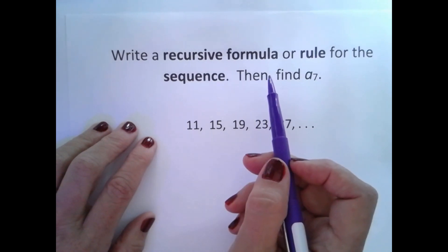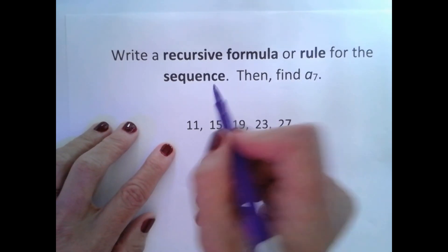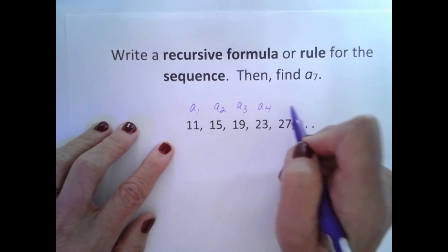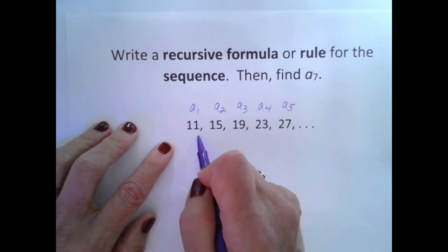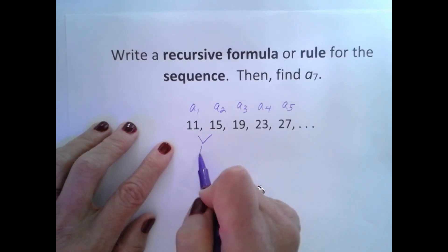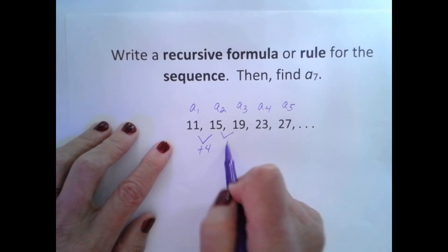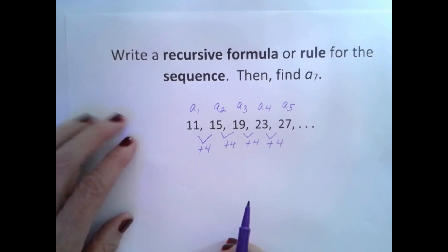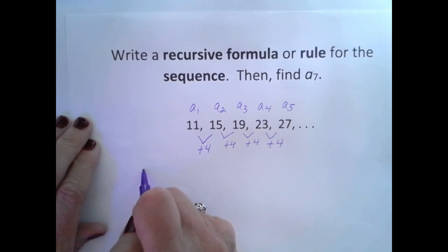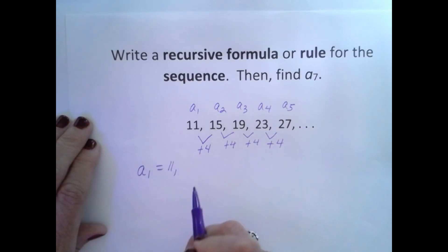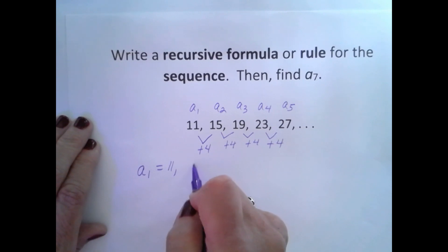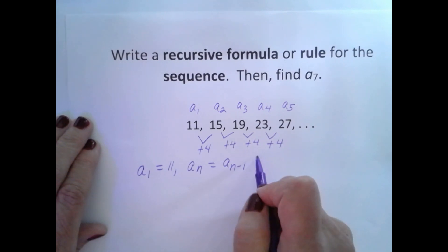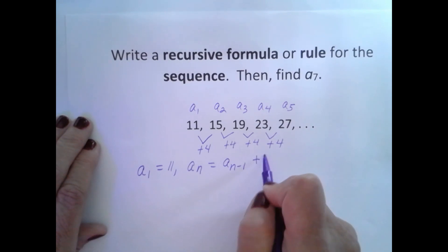Write a recursive formula or rule for the sequence, then find a sub 7. I'm going to list my terms: a sub 1, a sub 2, a sub 3, a sub 4, and a sub 5. Then I'm going to find a common difference — I'm going to add 4 each time. My common difference is 4. To write a recursive formula, I first write a sub 1: a sub 1 is 11. Then I write a recursive rule for a sub n: a sub n is equal to a sub n minus 1, which means the term before, plus the common difference. In this case, it is going to be plus 4.